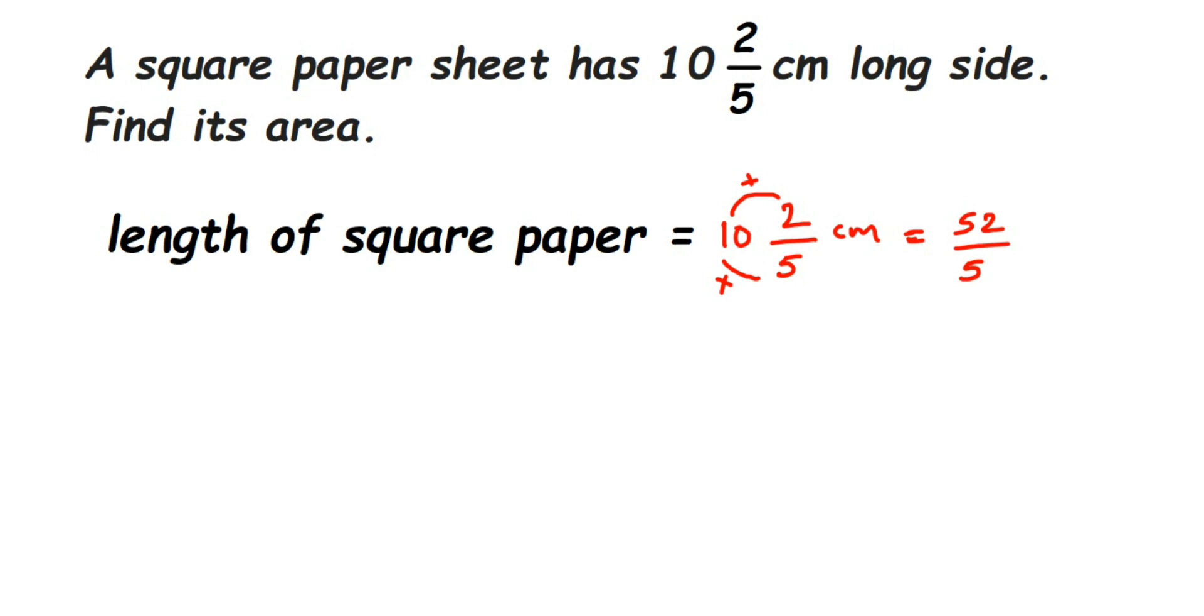Right, so area of square paper will be equal to side into side, formula is equal to side into side, or you can just write down side square. We're going to substitute the values here, so this is equal to 52 upon 5 centimeter multiplied by 52 upon 5 centimeter.